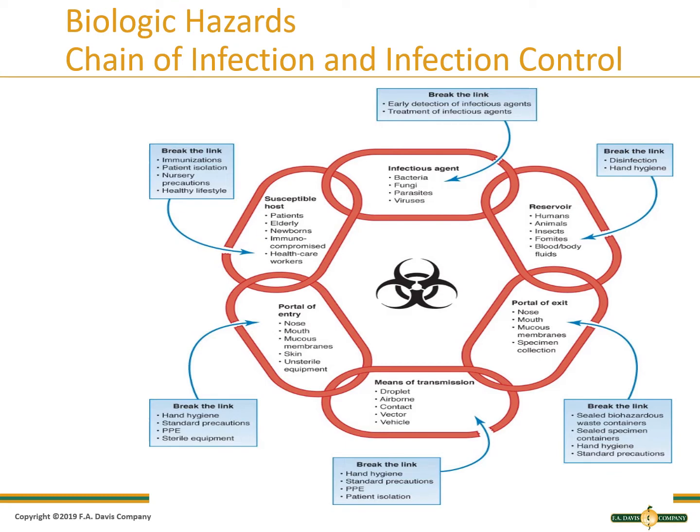This is a diagram of biological hazards — a chain of infection — and it talks about infection control. When we talk about breaking the chains that can lead to a new infection, hand hygiene breaks more chains in this chain of infection than any other single item.